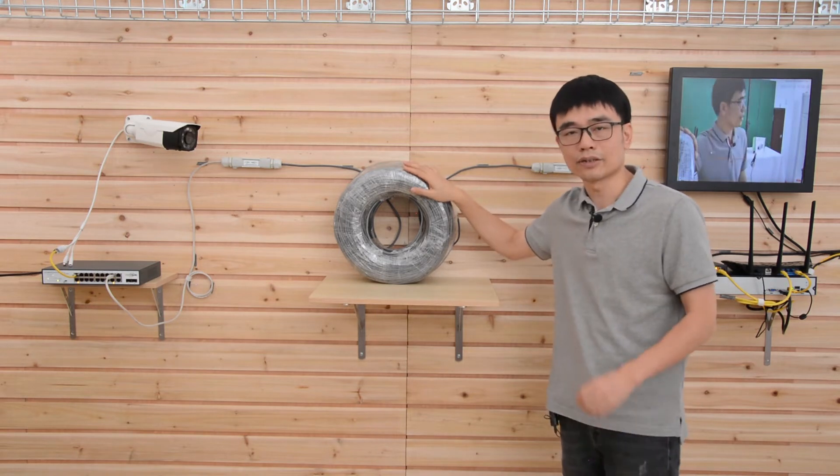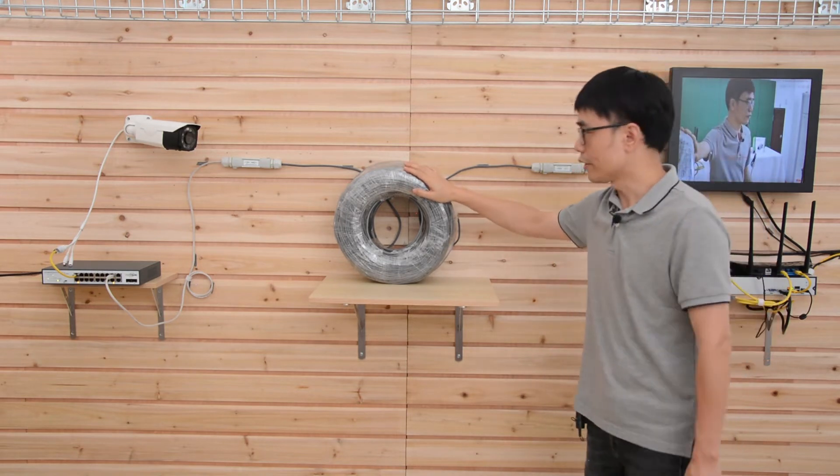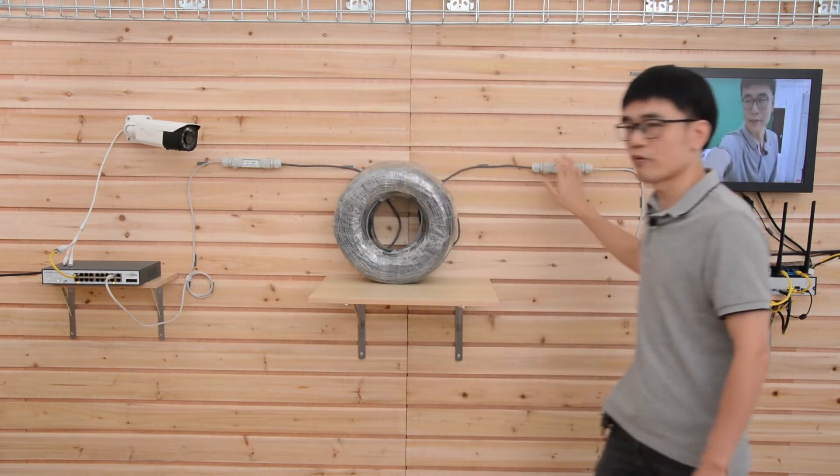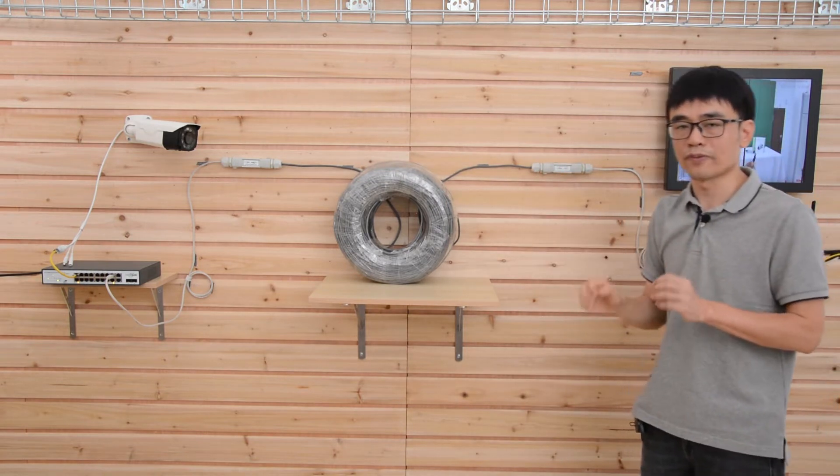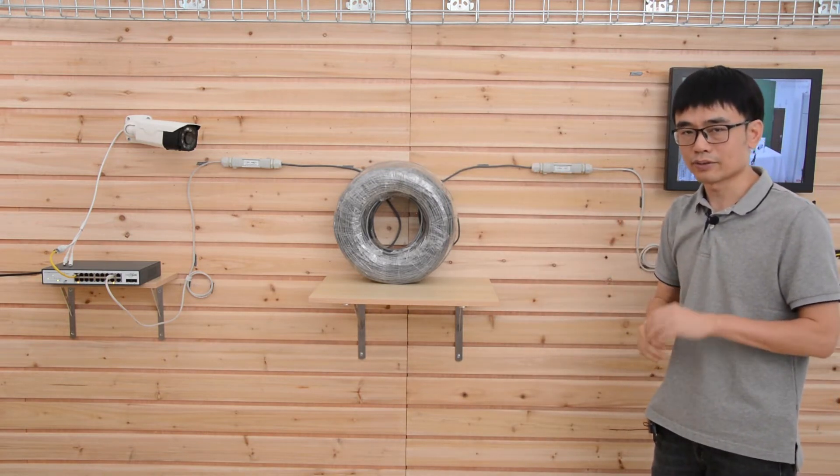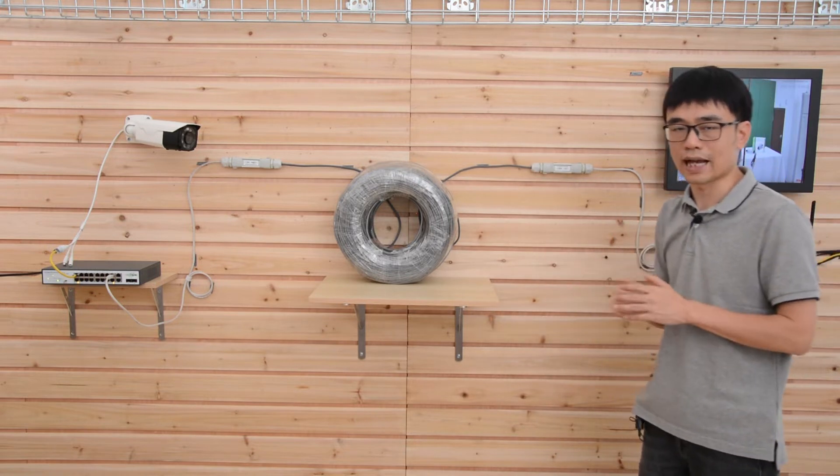This is the 1,000 continuous run Cat 5E Ethernet cable. We got two PoE extenders sitting at both ends. These two PoE extenders are the key to achieving a 1,000 continuous run. There's three things to pay attention to when we use this kind of system.